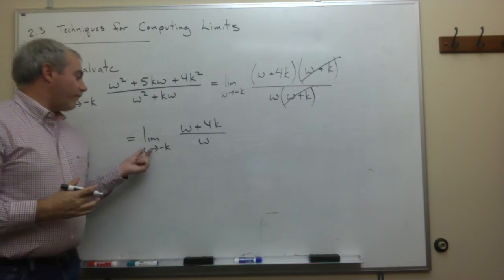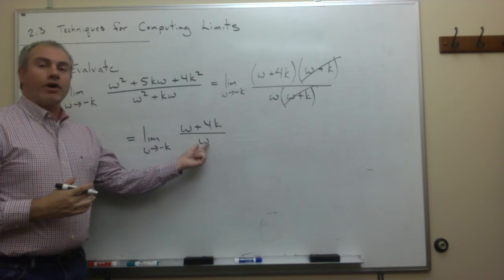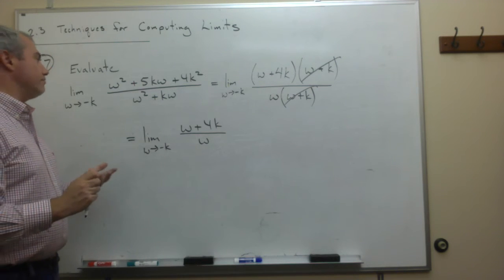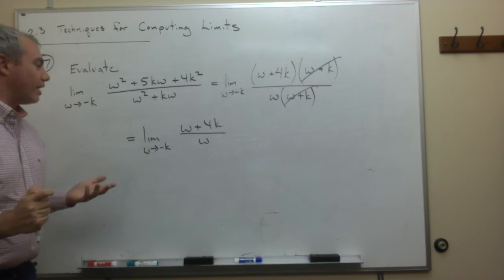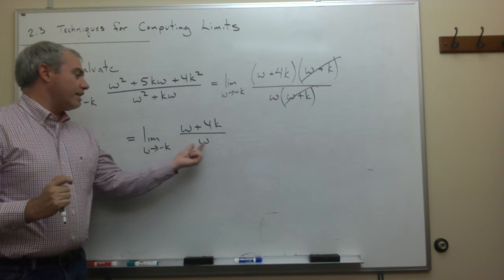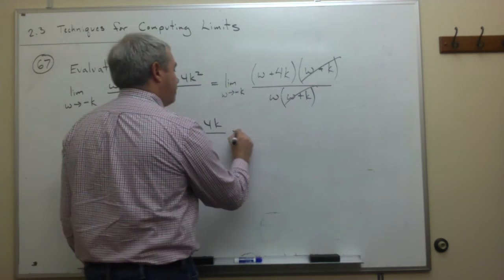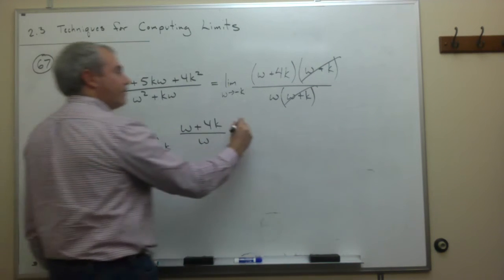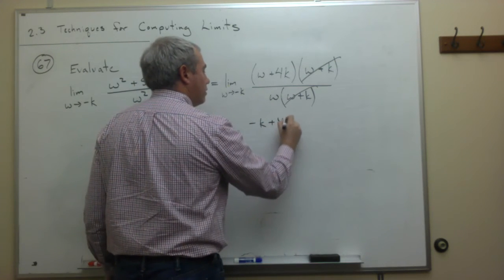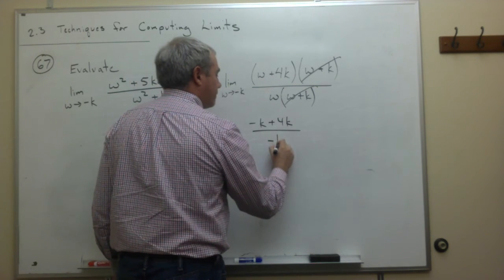Notice that now if I plug in that w goes to negative k, I don't get 0 on the bottom anymore, unless, of course, negative k were 0, which in its own way would be very terrible, but we're not going to really worry about that right now. So if we plug in negative k here, I don't get 0, I get negative k. Plugging in negative k's for w's, I get a negative k on top plus 4k, and on the bottom I get a negative k.